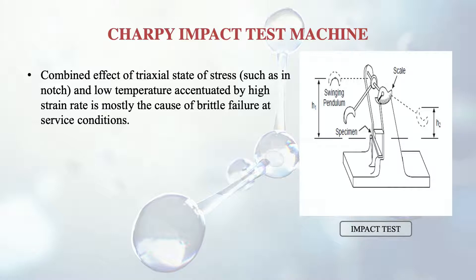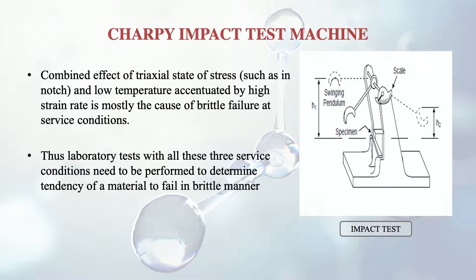Toughness is a very important property in this context. The combined effect of a tri-axial state of stress — such as in a notch — combined with a small crack that can propagate very fast, means we need to stop that propagation. The complication of tri-axial stress and low temperature is accentuated by high strain rate. Thus, laboratory tests with all three service conditions need to be performed to determine the tendency of a material to fail in a brittle manner.